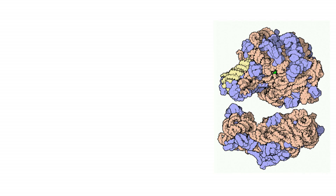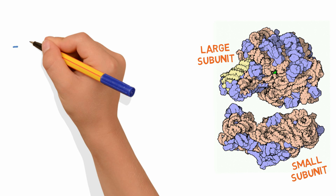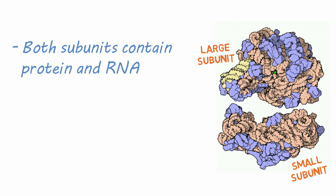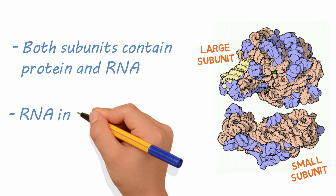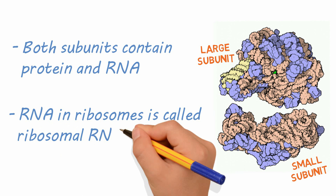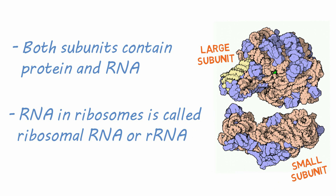Ribosomes have two major subunits, simply called the large and small subunits. Both subunits contain protein and RNA. The RNA in ribosomes is called, not surprisingly, ribosomal RNA, or rRNA for short.